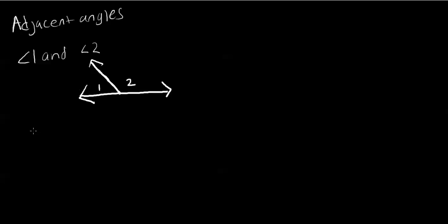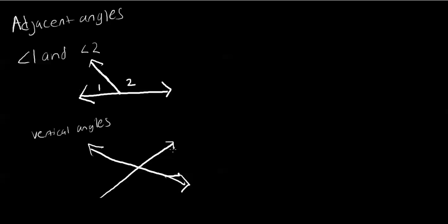Now we're going to look at vertical angles. Vertical angles are two angles whose sides are opposite rays. Here you can see we have angles 1, 2, 3, and 4. Angles 1 and 2 are vertical angles because they are on opposite sides of each other. Angles 3 and 4 are vertical angles because they are also on opposite sides.